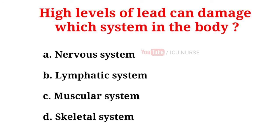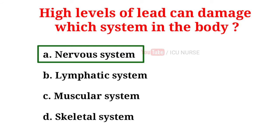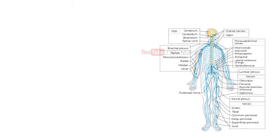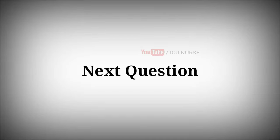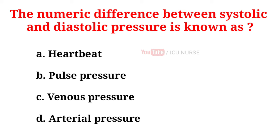High levels of lead can damage which system in the body? A. Nervous system, B. Lymphatic system, C. Muscular system, D. Skeletal system.